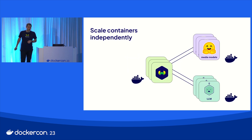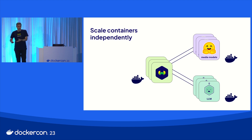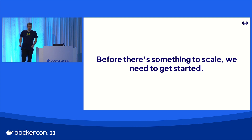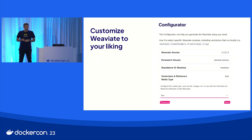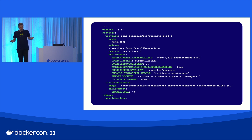Every single one of those components is a container, and every single one of those containers can be deployed and scaled independently. You have very different needs, for example, for scaling Weaviate as the database — you're probably storage bound. Scaling the models, they have different infrastructure requirements, most likely making use of GPUs. If you go to weaviate.io in the documentation section, there's a configurator that asks you all kinds of questions like 'Do you have your own vector embeddings already? Do you want Weaviate to generate them for you?' Based on your answers, you get a Docker Compose file. Weaviate is open source. You can also integrate with OpenAI's API or Cohere's API, or run open source models locally. You just get the Docker Compose file and do a docker compose up and you have a GenAI stack.